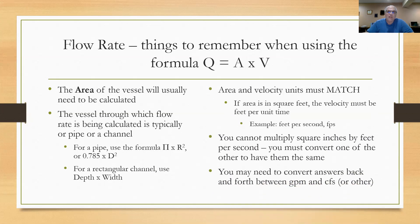Another thing to remember is that area and velocity units must match. If area is in square feet, the velocity must be feet per unit time, like feet per second or feet per minute. You cannot multiply square inches by feet per second - you must convert one of them to have them be the same. You may need to convert between gallons per minute and cubic feet per second using a constant.